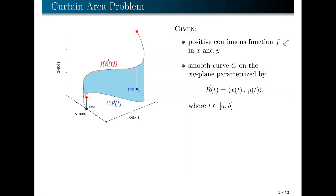Suppose you are given a continuous function f in two variables x and y. We assume that f is positive, which means that the graph of f should lie somewhere above the x-y plane. In addition, we also have a smooth curve c on the x-y plane, parameterized by the vector-valued equation r(t) with components x(t), y(t), where t is in the closed interval [a, b]. The curve c is represented by the blue curve. The initial point is at t = a, and the terminal point is at t = b.